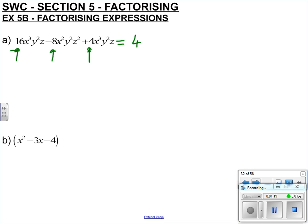So we can take out a factor of 4 into a big bracket. Then systematically: what do we need to times 4 by to make 16? We need to times it by 4. What do we need to times 4 by to make minus 8? We need minus 2. And what do we need to times 4 by to make 4? Just plus 1. So I'm dealing with the numbers first.